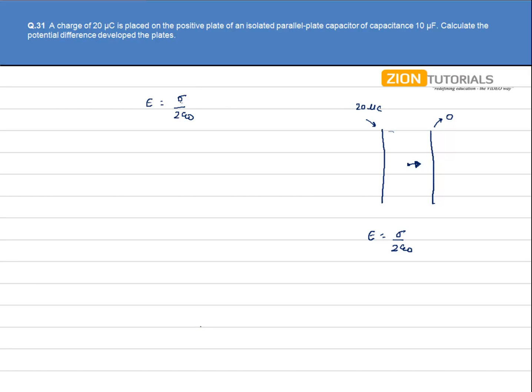So we have electric field given by sigma upon 2 epsilon not. Electric field as we know is V by D. So we write V by D is equal to sigma divided by 2 epsilon not.